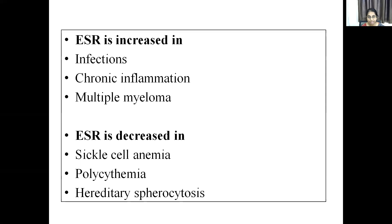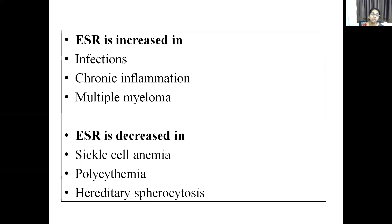ESR is decreased in polycythemia because closely packed RBC in the tube cannot settle easily. Other conditions with decreased ESR include abnormal RBC shapes like sickle cell anemia and hereditary spherocytosis. These abnormal shapes cannot promote rouleaux formation, so ESR is not increased. Remember: although anemia generally increases ESR, sickle cell anemia and hereditary spherocytosis are two anemias where ESR is actually decreased.